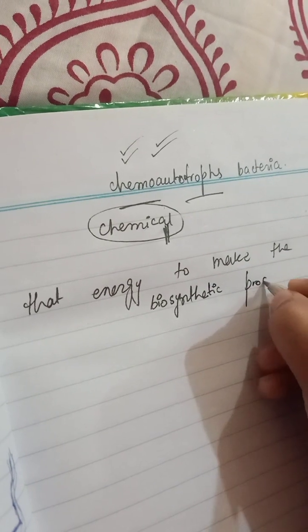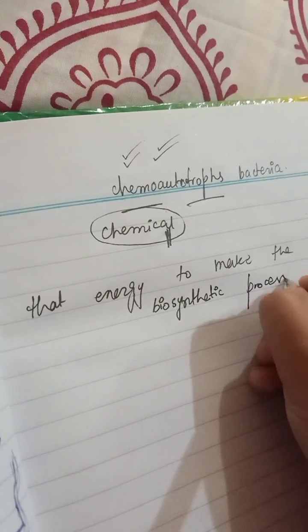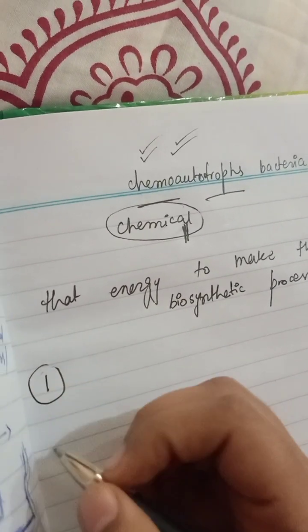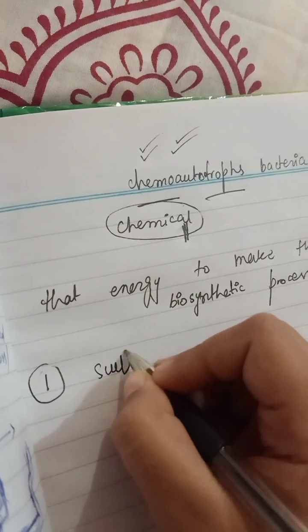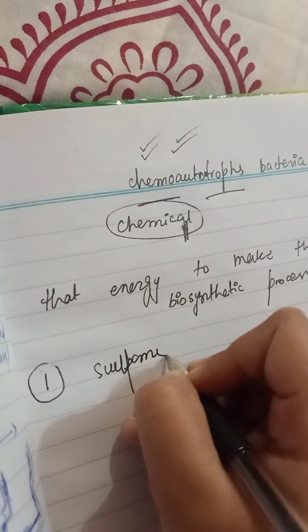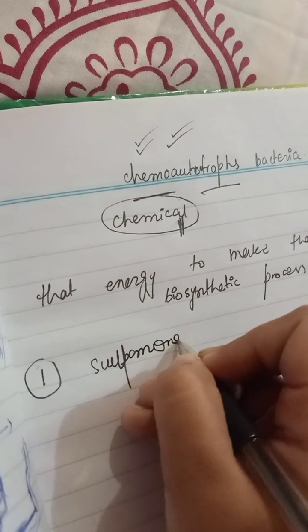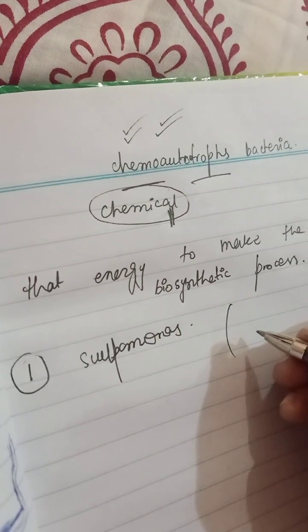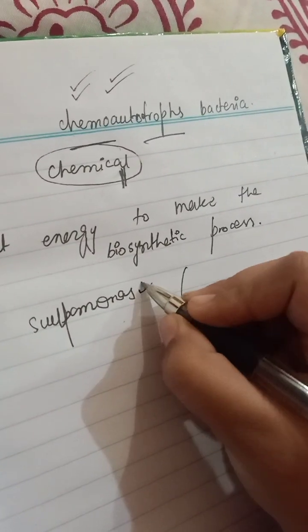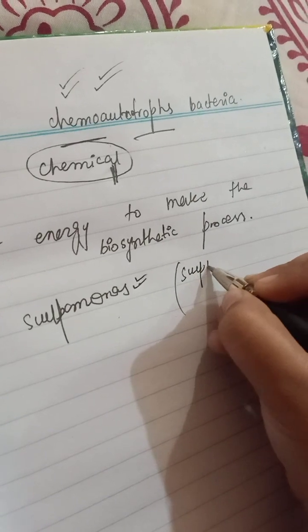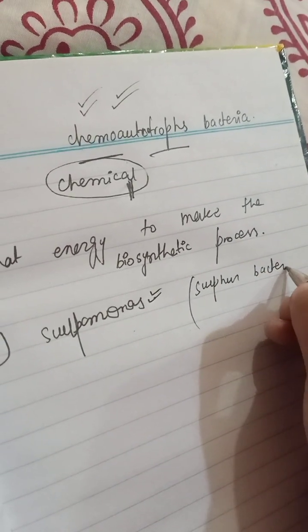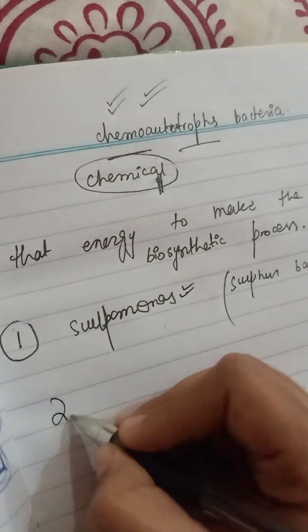The first type of chemo autotrophs we have is Sulfomonas — the sulfur bacteria. They basically oxidize sulfur compounds to obtain energy.